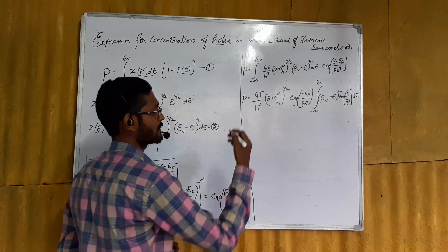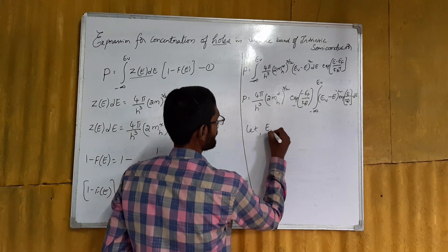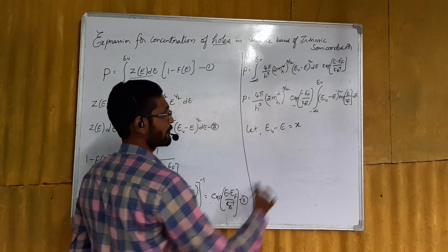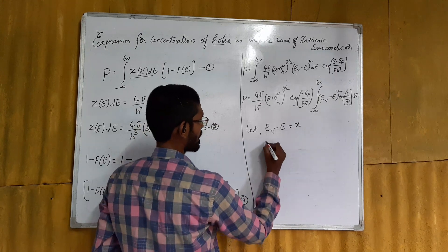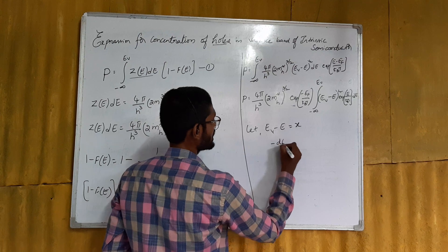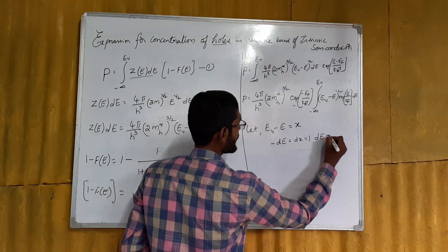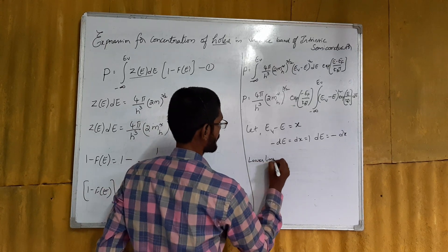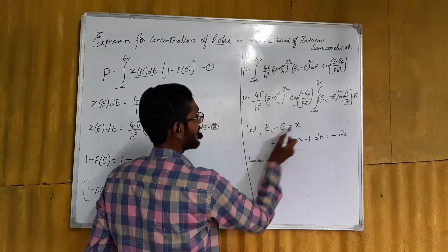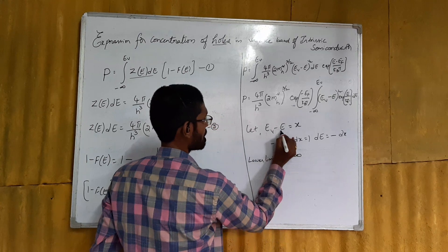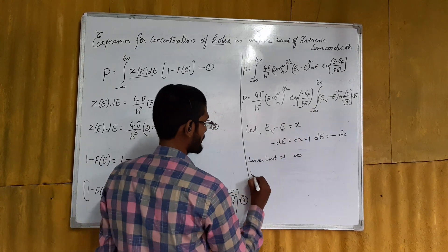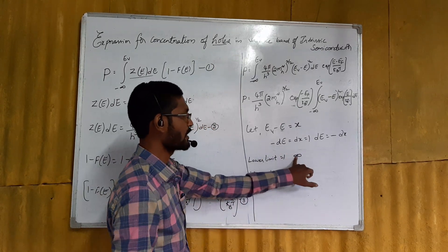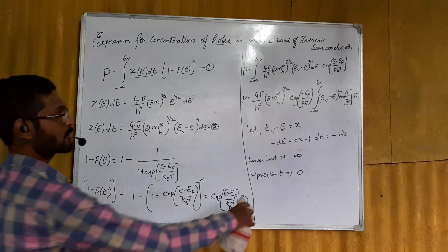To solve the integral, we use the substitution: let Ev - e = x. Differentiating, d(Ev) = 0, so -de = dx, giving de = -dx. The limits also change: when e = -∞, the lower limit becomes Ev - (-∞) = ∞; when e = Ev, the upper limit becomes Ev - Ev = 0. So the new limits are from infinity to 0.